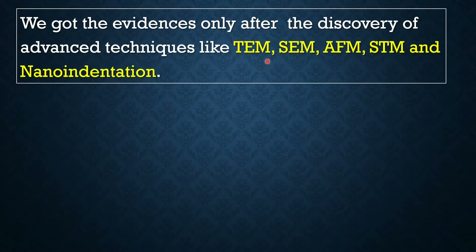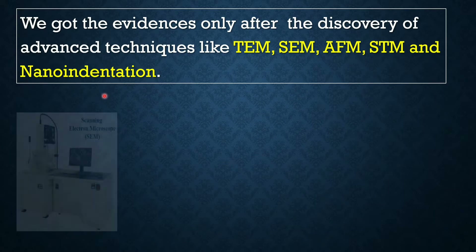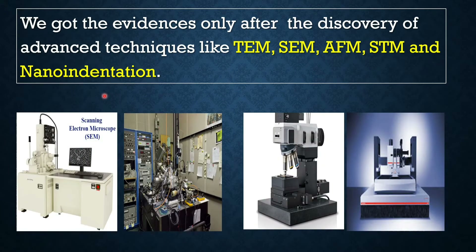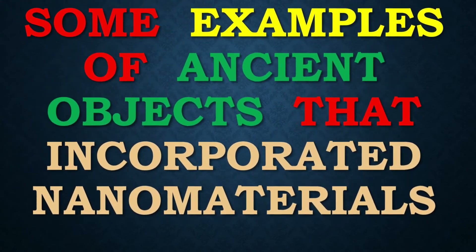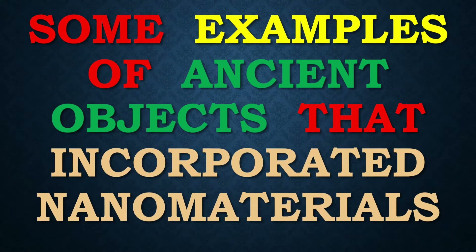These advanced techniques include TEM (transmission electron microscopy), SEM (scanning electron microscopy), AFM (atomic force microscopy), STM (scanning tunneling microscopy), and nano-indentation. These are the techniques used to characterize nanoparticles. By knowing the properties of nanoparticles, we can understand how and why they were used. Now let's see some examples of ancient objects that incorporated nanomaterials.